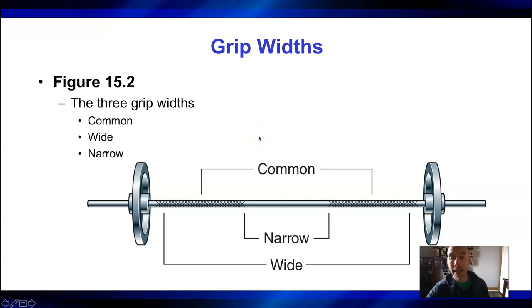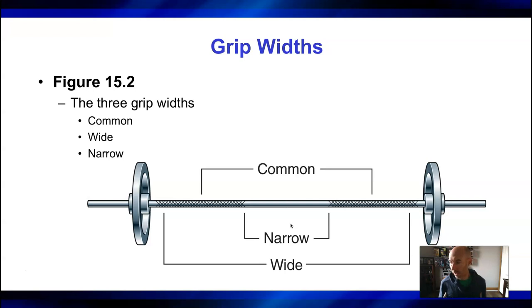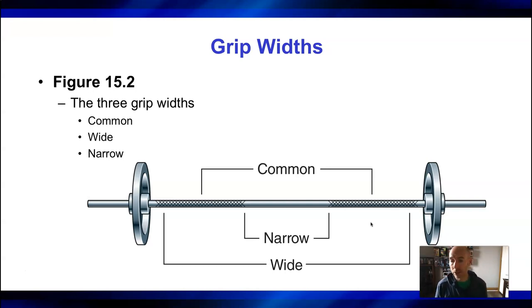Another thing to consider is grip width — how wide you want your grip to be. Moving your grip closer together or wider is another way to vary the stimulus on your muscles. For most exercises and for novices, you're always going to start with shoulder width — that's referred to as the common width. For people looking to build their chest muscles, conventional wisdom holds that a narrow grip works the inner chest more, and a wider grip works the outer chest more. For somebody trying to get good at the bench press, using all three grip widths is recommended, but for most people the common shoulder width grip is your go-to.